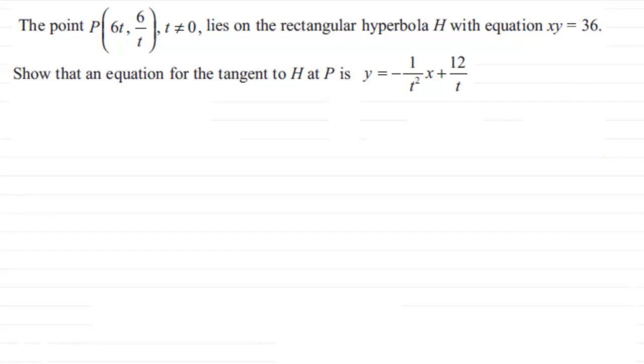Rectangular hyperbolas like this have this shape which we should be familiar with. So this is our curve H, and its equation rearranged for y is y equals 36 divided by x.